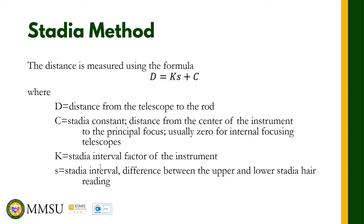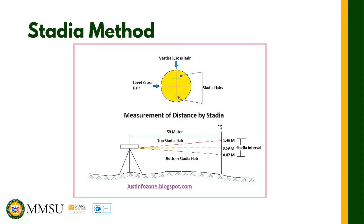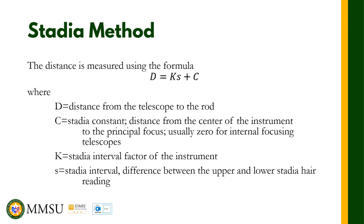K is the stadia interval factor of the instrument. This is inherent to the instrument, and the manufacturers typically set K equal to 100. S is the stadia interval — the difference between the upper and lower stadia hair readings.